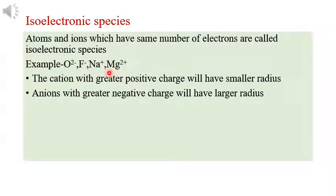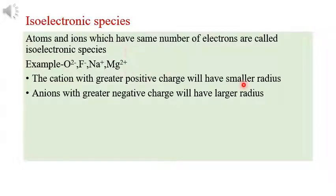Magnesium has 12 electrons, and if it loses 2 electrons, it forms Mg²⁺. Among isoelectronic species, the cation with the greater positive charge will have the smaller radius — so Mg²⁺ is the smallest. The anion with the greater negative charge will have the larger radius — so O²⁻ has the largest radius. Even though they are isoelectronic species, their radii differ in that order.